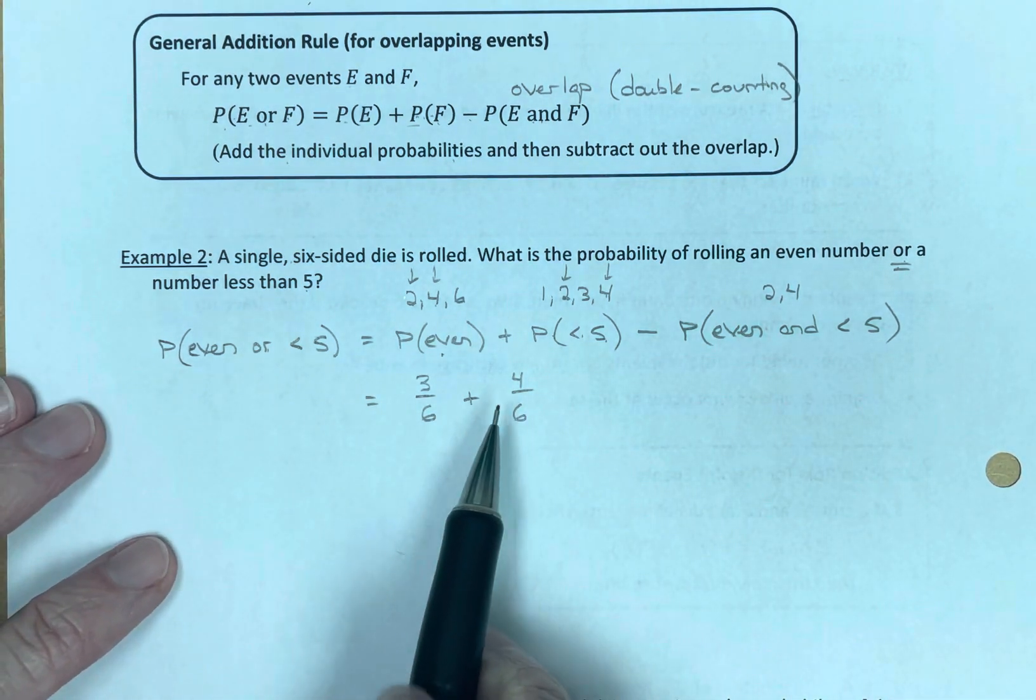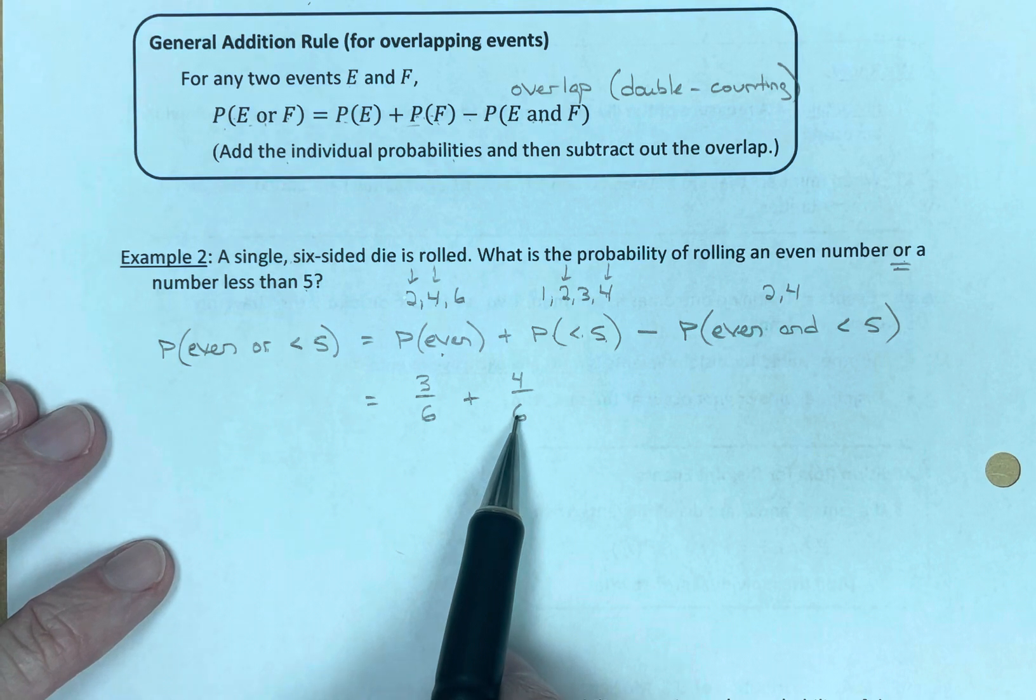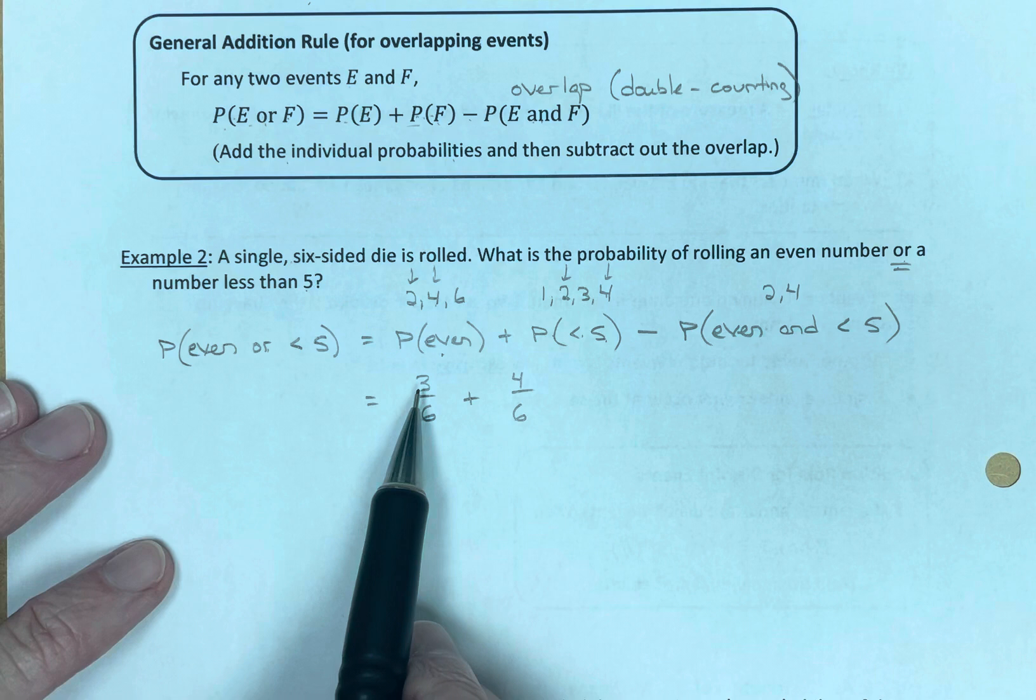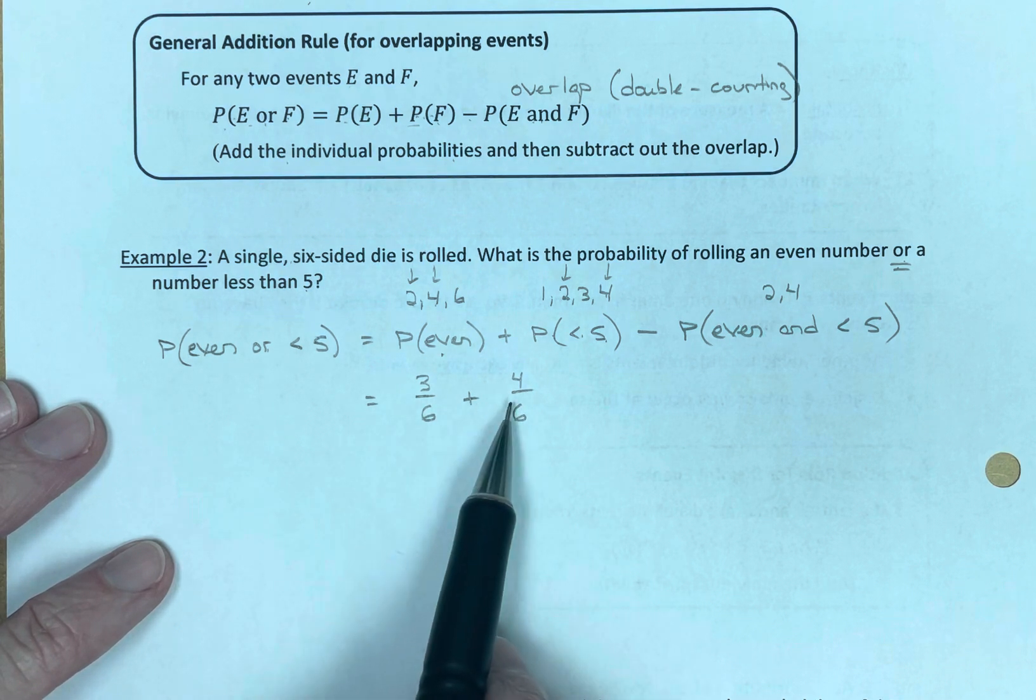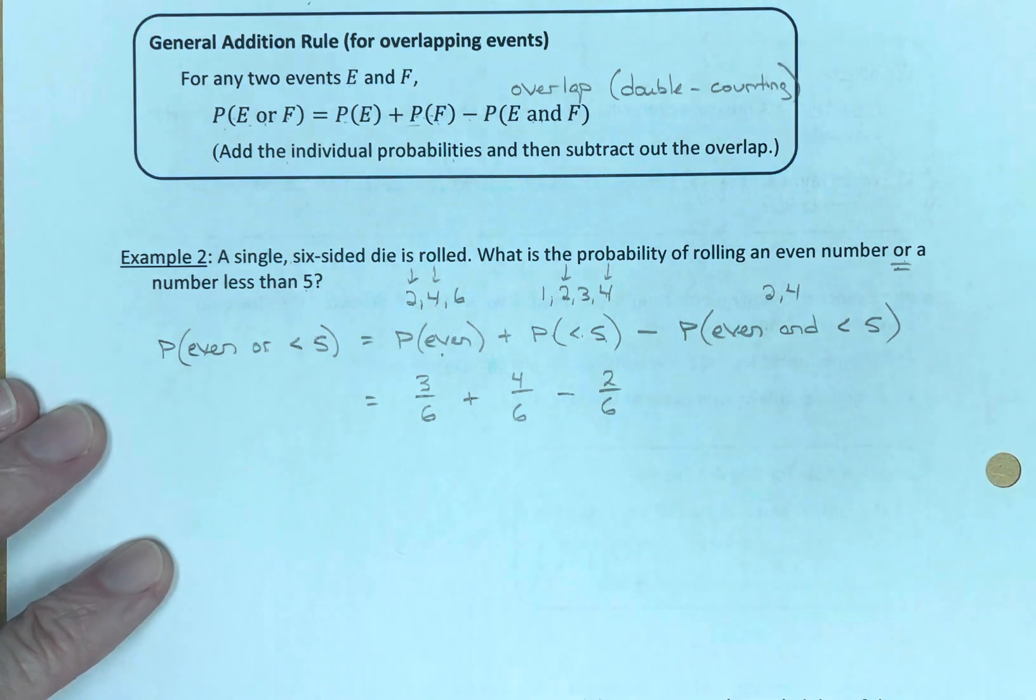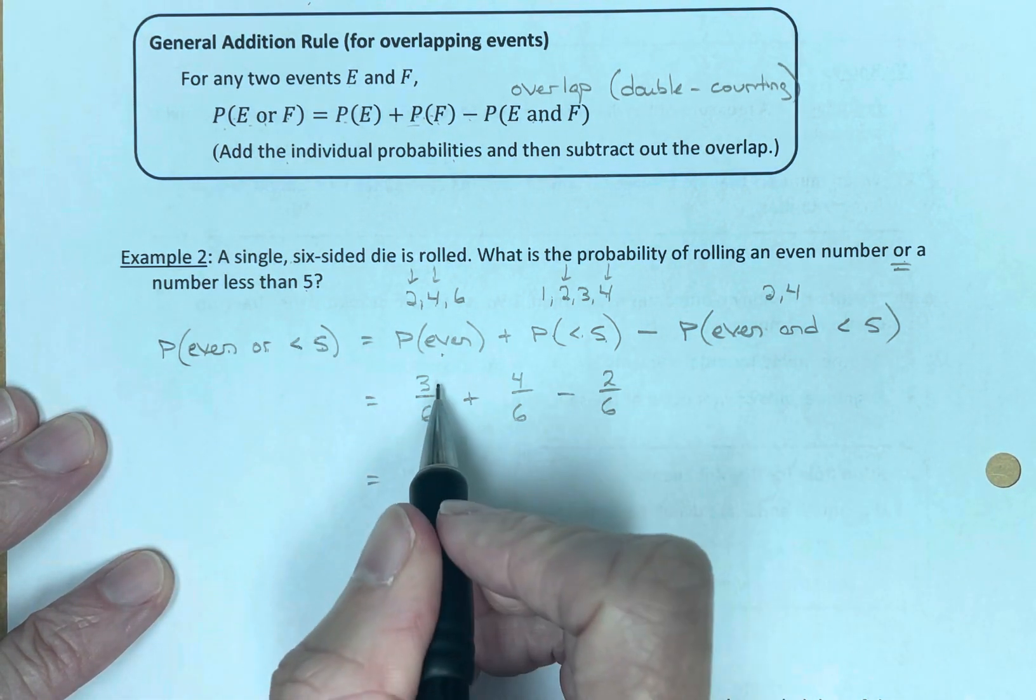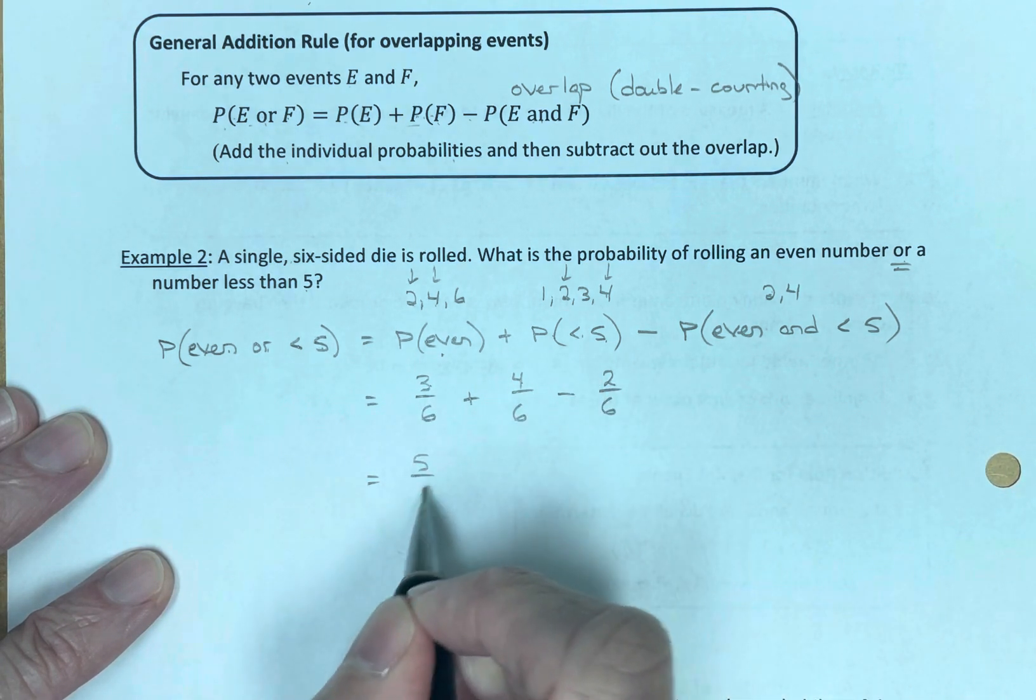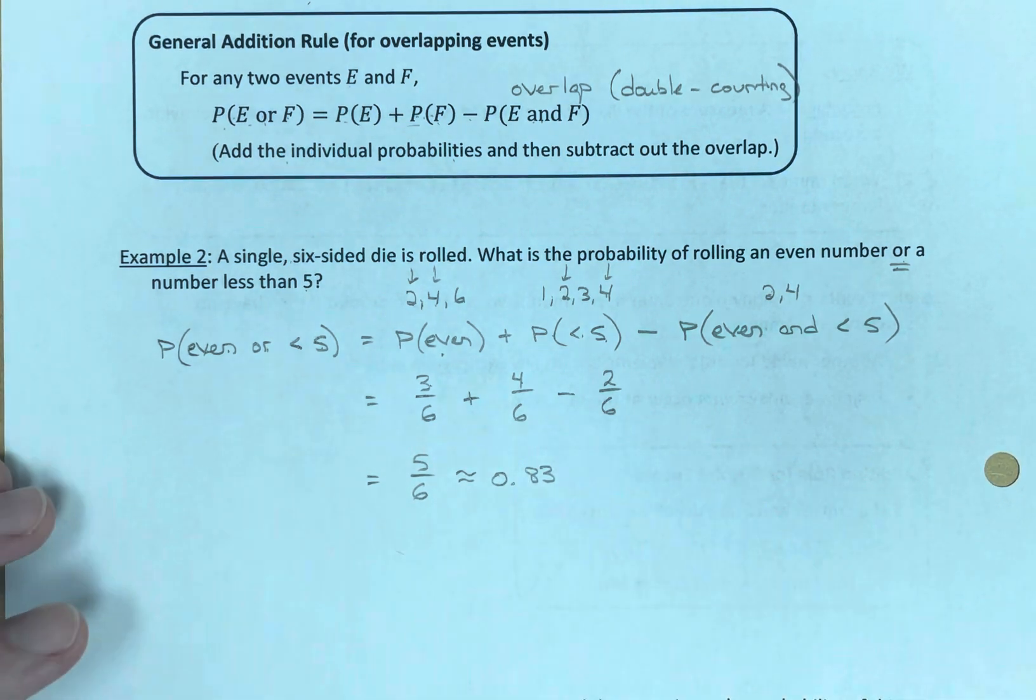Notice if I stop here and I add these two probabilities, I get seven out of six, which should present a red flag to you because probability can never be greater than one. So when you wind up with a probability that's greater than one, you know something's up. You can't have a probability greater than 100%. This is 117%. You can't have that. So we know we need to subtract out of this. Two of the numbers got counted twice. So we're going to subtract two out of six because of double counting. And so the probability of an even or a number less than five: seven minus two is five. Five out of six, which as a decimal is approximately 0.83.